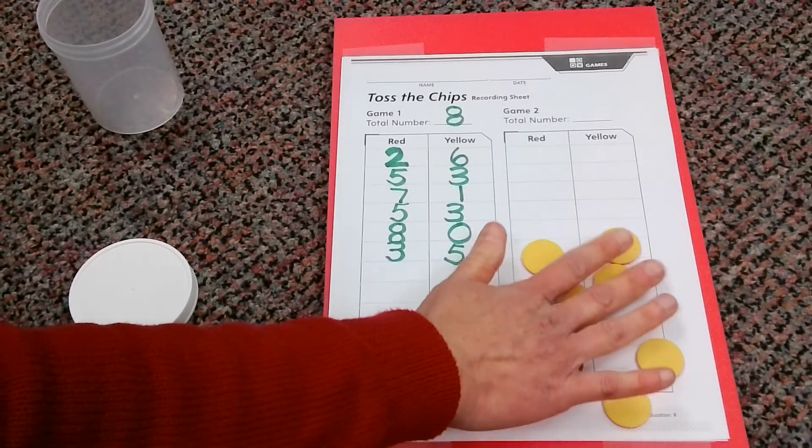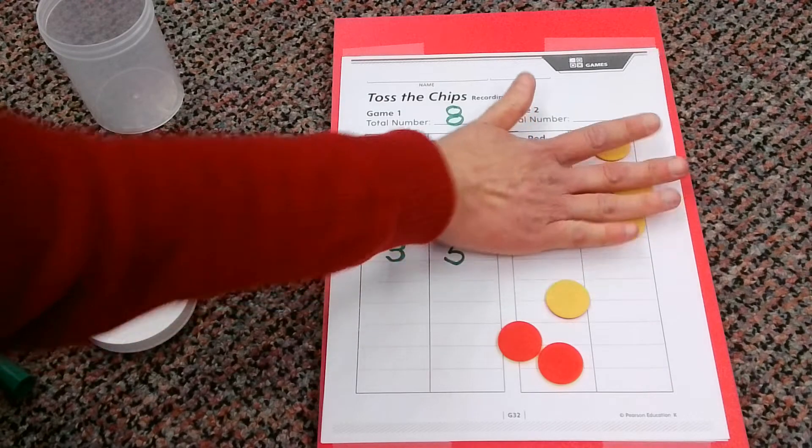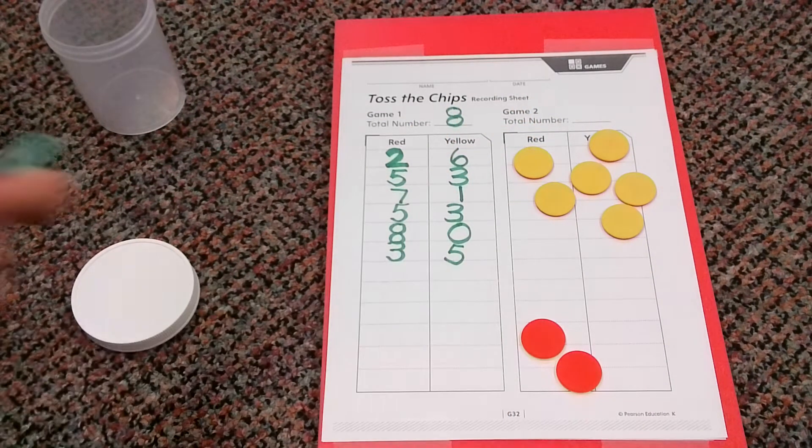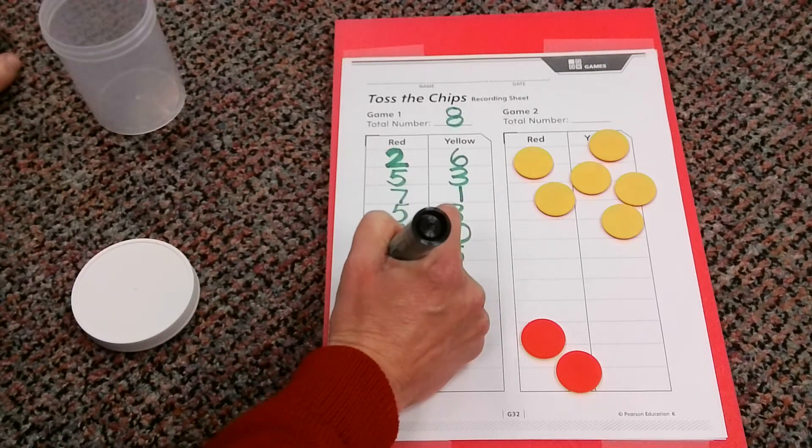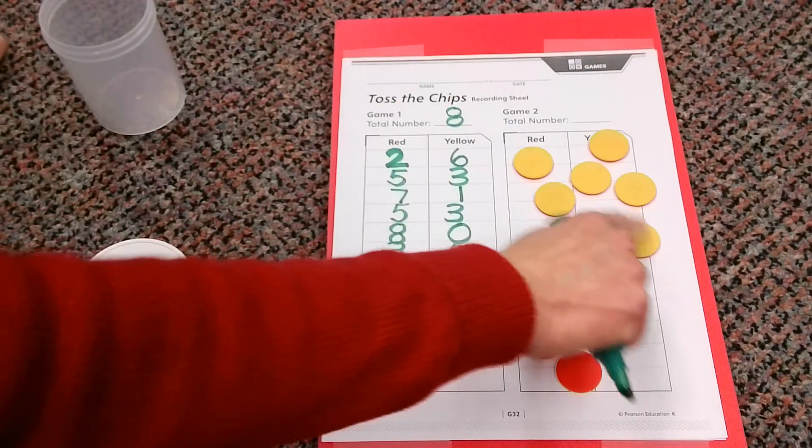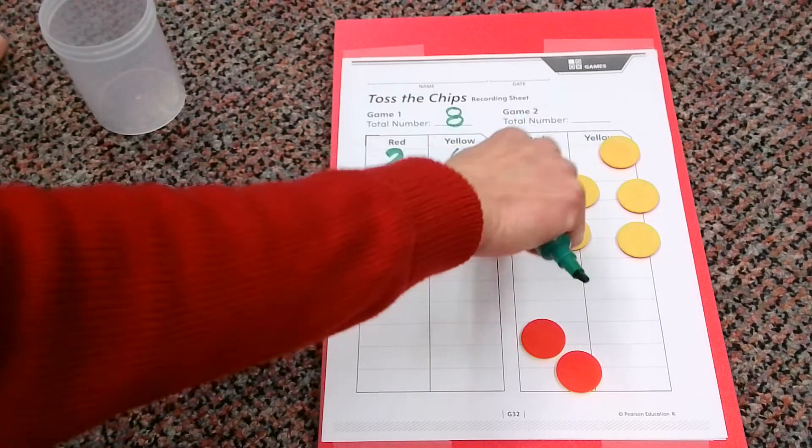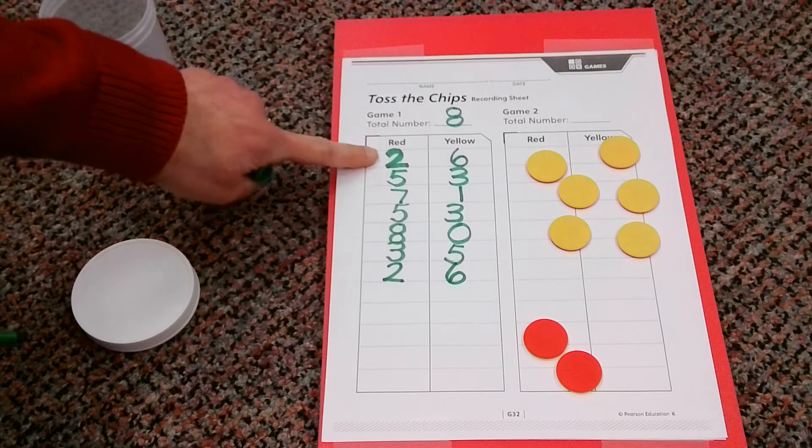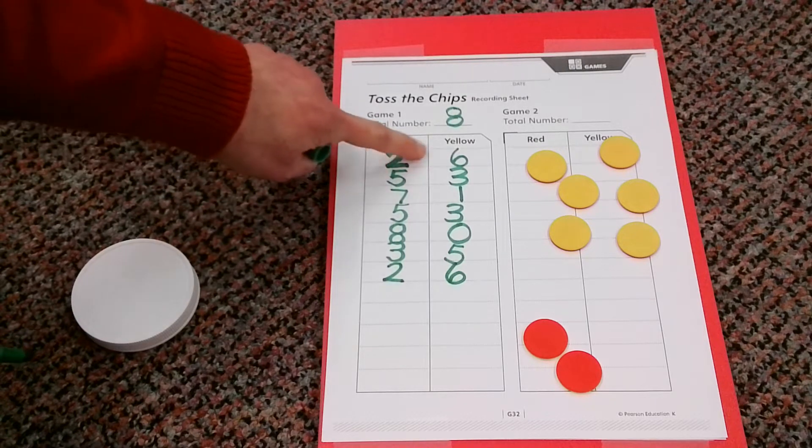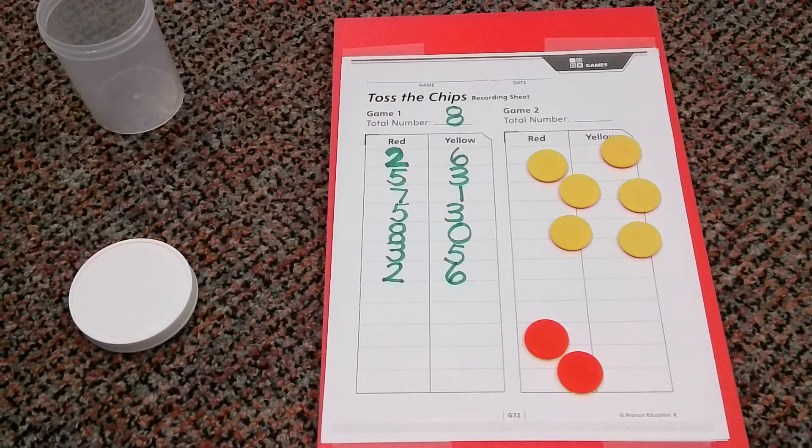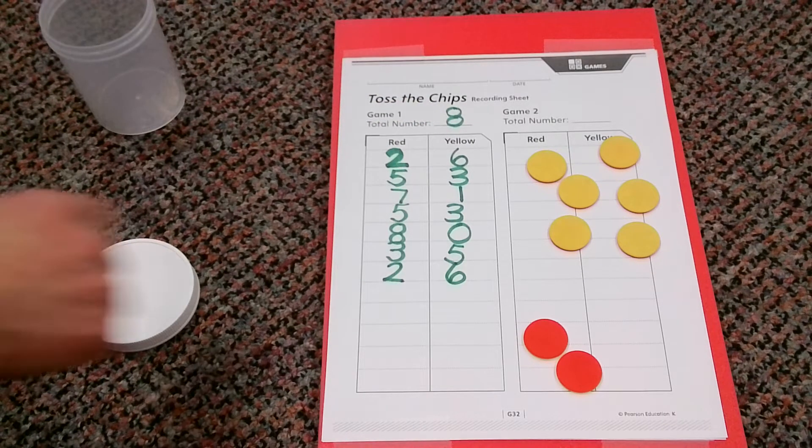Let's see how many reds. One, two. Let's see how many yellows. One, two, three, four, five, six. Just like our very first one. Two plus six. Two plus six equals eight. All right, let's try one more.